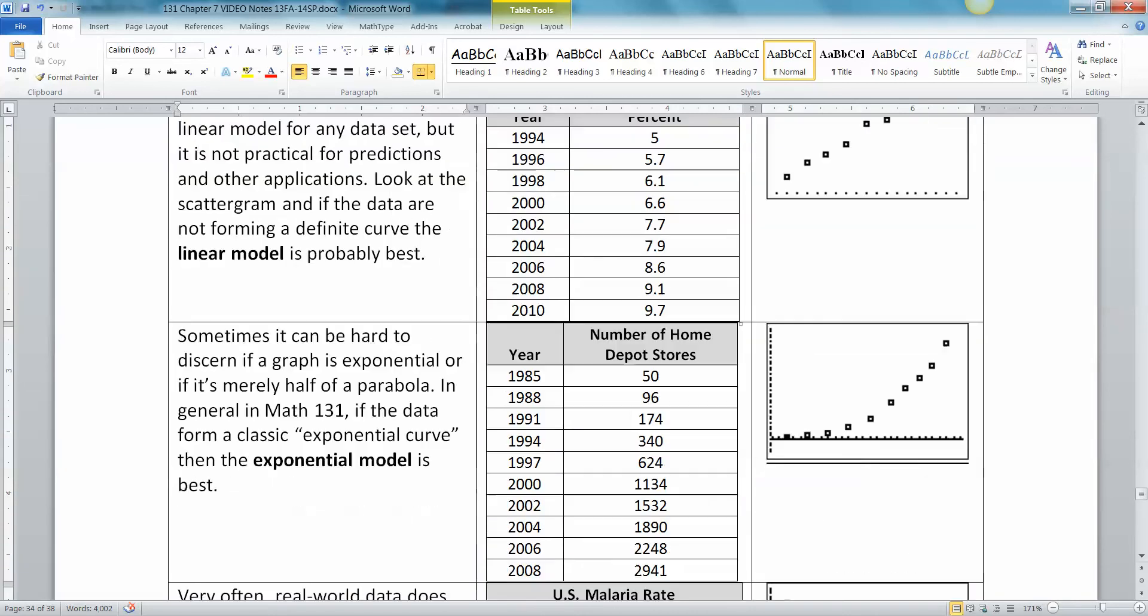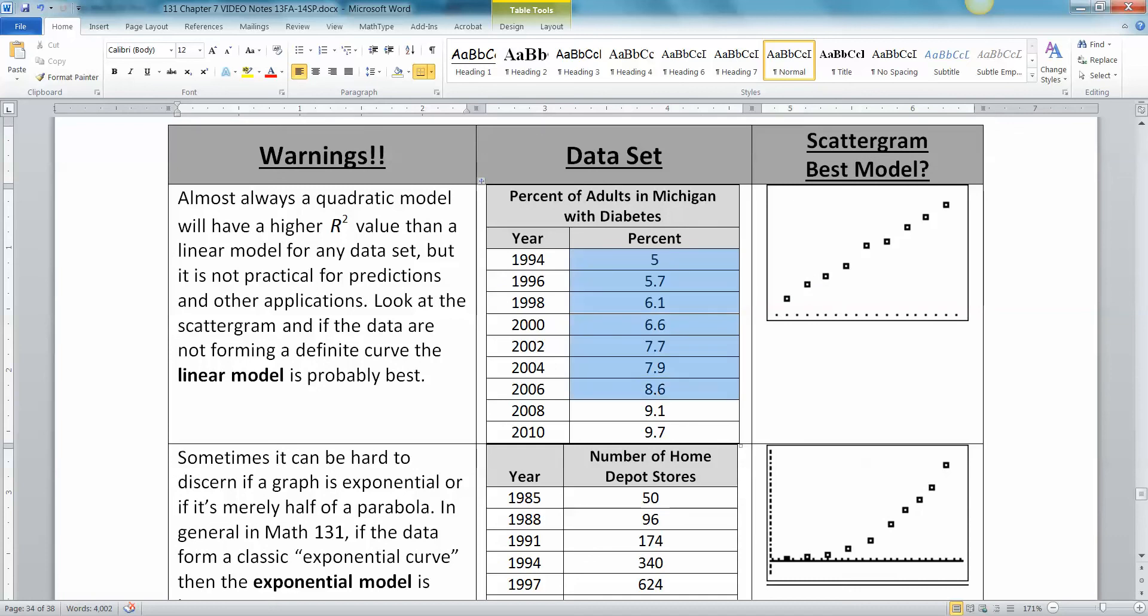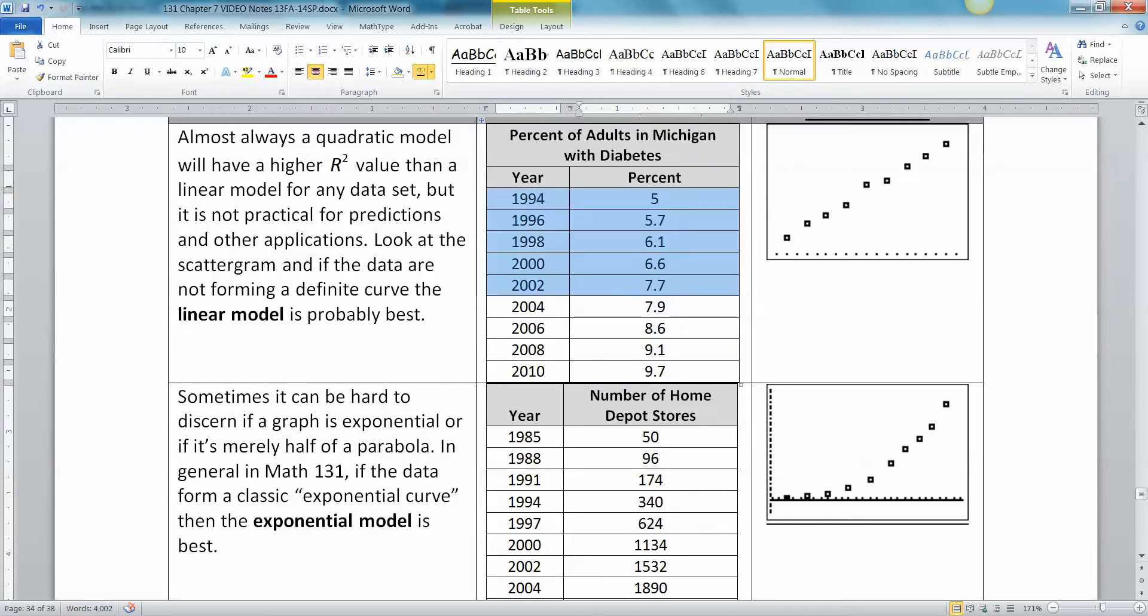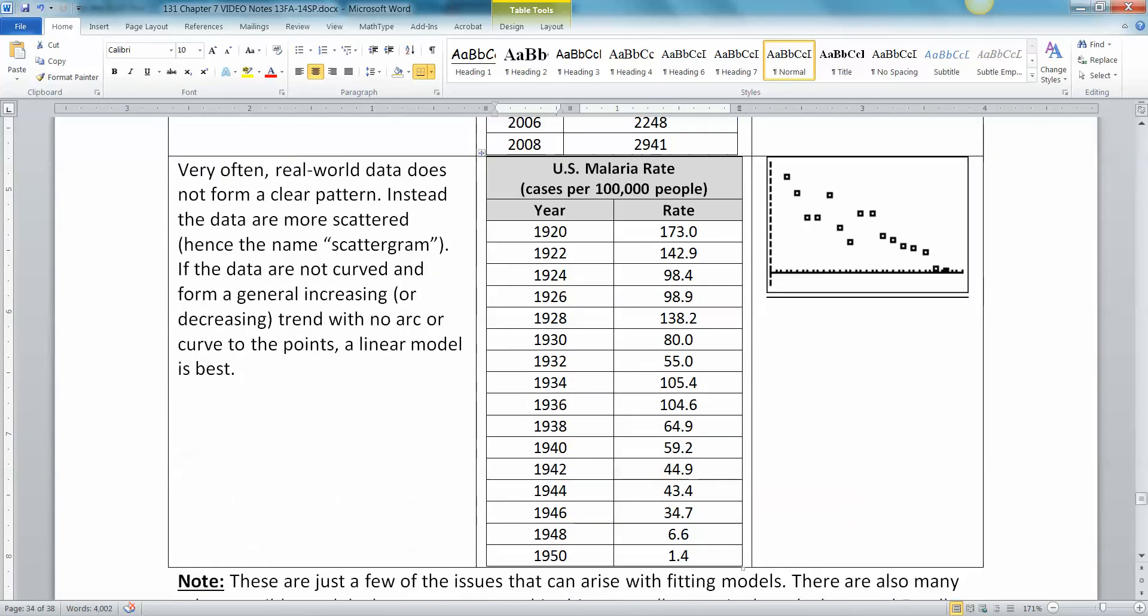And last but not least, real-world data doesn't really look like either of these pictures above. Yes, these actually are real-world data, but I trimmed down a much bigger data set to get these numbers. Real-world data often looks much, much more messy, like this right here. Real-world data doesn't often form a clear pattern. Instead, the data are more scattered, hence the term scattergram. So if the data are not curved and they're forming a general increasing or decreasing trend, then stick with a linear model for the purposes of this course. If you don't see like an arch to this, you don't see like a curve, then it's not exponential, nor is it quadratic, and stick with a linear model.